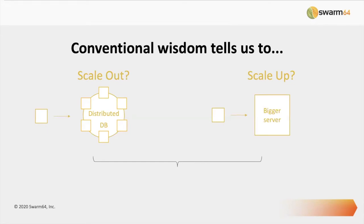When Postgres hits a wall — you've tuned it as far as you can go — what we've been conditioned to do over the last 10 to 15 years is think of one of two strategies. The most traditional is to move your Postgres database from a machine with eight cores to a bigger server. That's safe, easy, and straightforward, but kind of expensive, and usually a little short term just because you tend to keep outgrowing servers as your business grows.